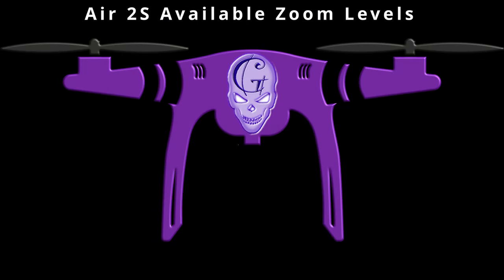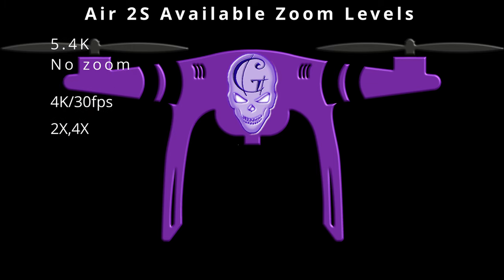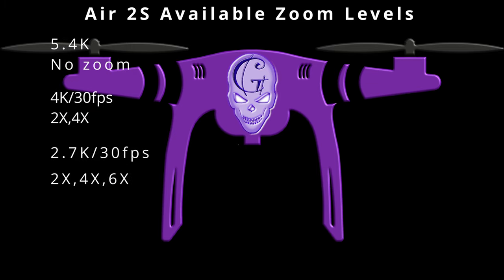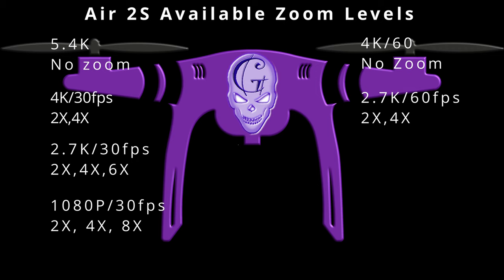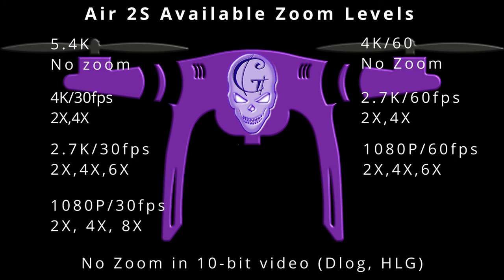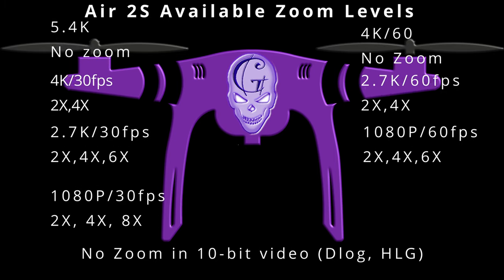Another great feature of the Air 2S is its ability to zoom while shooting video. Here's a quick outline of the available zoom levels at the different resolutions and FPS: 5.4K has no zoom; 4K 30 has 2x and 4x zoom; 2.7K 30 has 2x, 4x and 6x zoom; 1080p 30 has 2x, 4x and 8x zoom; 4K 60 has no zoom; 2.7K 60 has 2x and 4x zoom; and 1080p 60 has 2x, 4x and 6x zoom. It's important to note that zoom features are only available in the Normal shooting format — they are not available in D-Log or HLG.